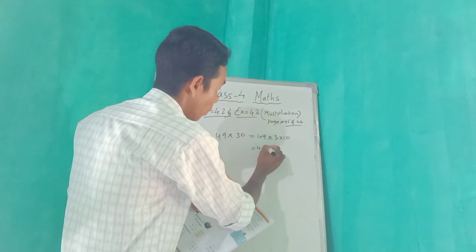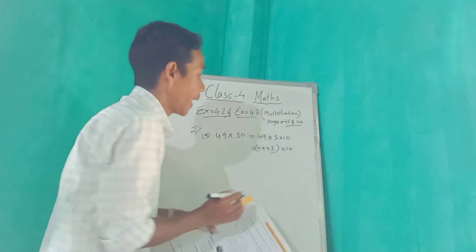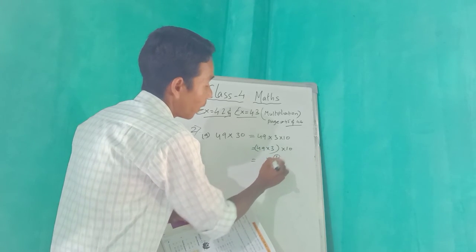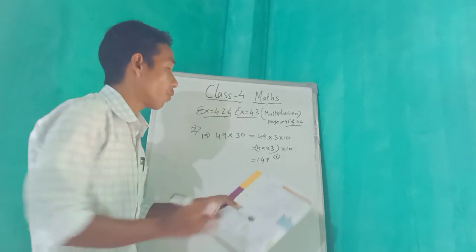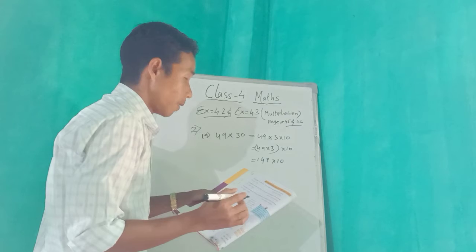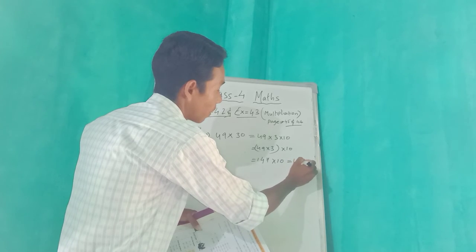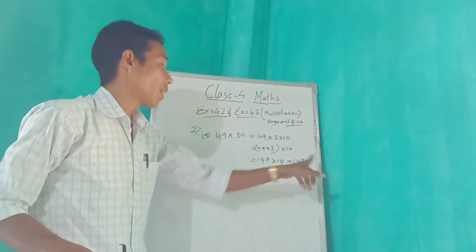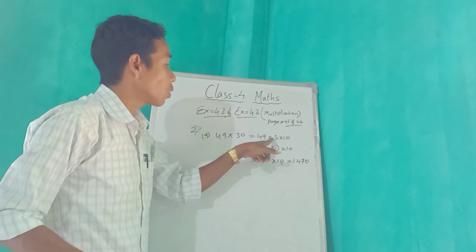49 into 3 in bracket, then into 10. Now we do 49 into 3: 3 nines are 27, carry 2; 3 fours are 12, plus 2 is 14. So 49 into 3 equals 147. Then 147 into 10 — we add a 0 — equals 1470. This is our answer. 49 into 30 means 49 into 3 into 10.